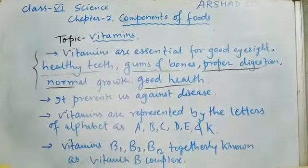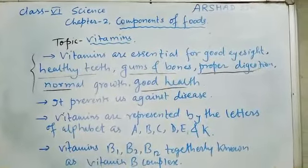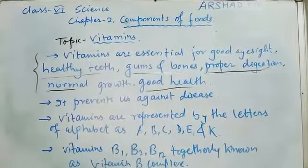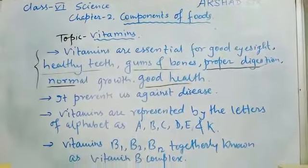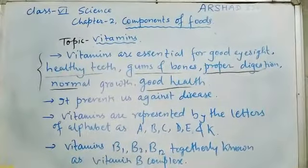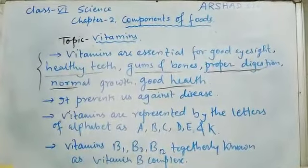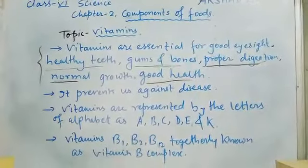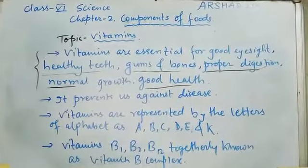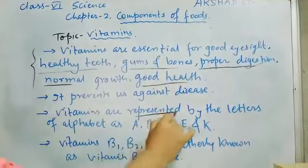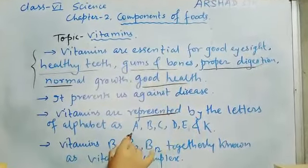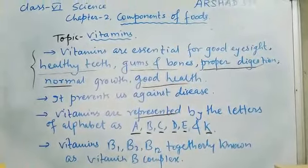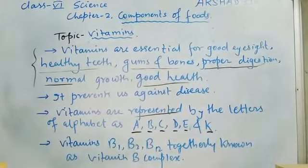We have different kinds of vitamins, like Vitamin A, Vitamin B, Vitamin C, Vitamin D. We represent them with the alphabets A, B, C, D, E, and K. So we have a lot of different types of vitamins.